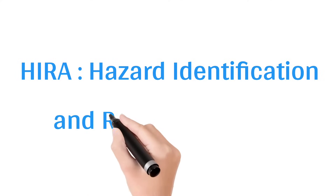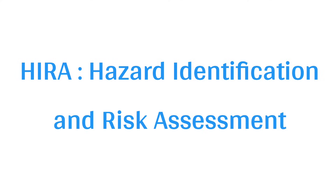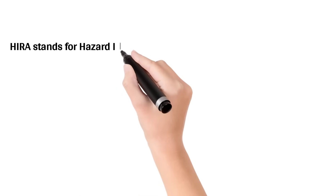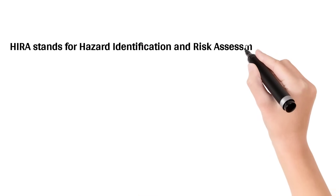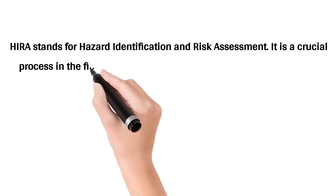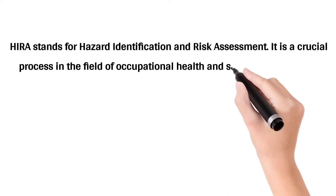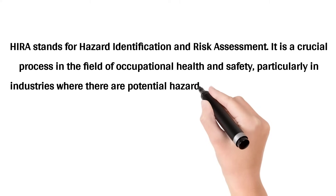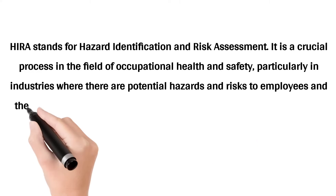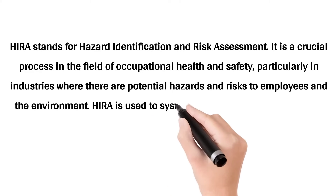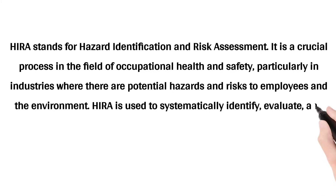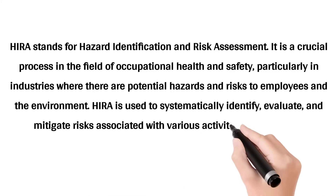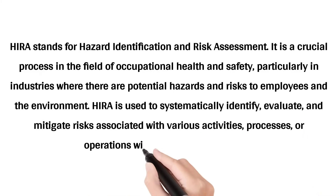HERA stands for Hazard Identification and Risk Assessment. It is a crucial process in the field of occupational health and safety, particularly in industries where there are potential hazards and risks to employees and the environment. HERA is used to systematically identify, evaluate, and mitigate risks associated with various activities, processes, or operations within an industrial setting.